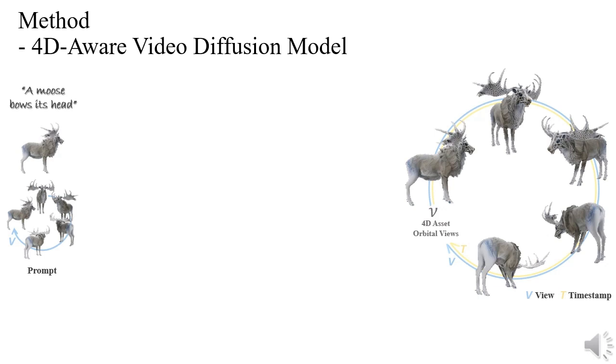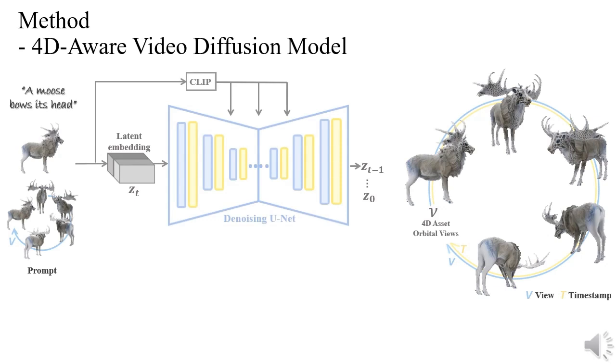We generate this orbital video with a 4D-aware video diffusion model. To train the proposed diffusion model, we curated a large-scale, high-quality dynamic 3D dataset sourced from the vast 3D data corpus of Objaverse. Then, we render a vast number of orbital videos of dynamic 3D assets. We select recent works of 3D-aware video generation models as the pre-trained model.